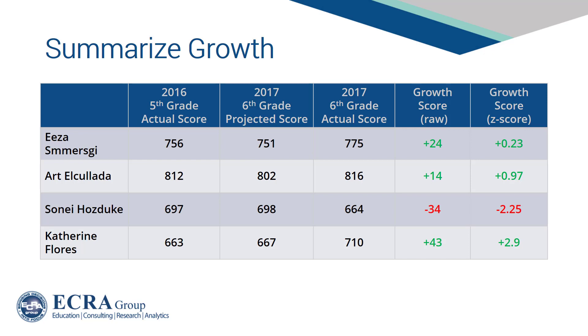A variety of approaches exist to summarize student growth for groups of students. Average growth, the percentage of students that met or exceeded their projected score, or the percentage of students within a desired confidence band are prevailing approaches.